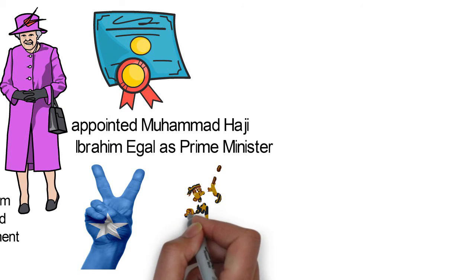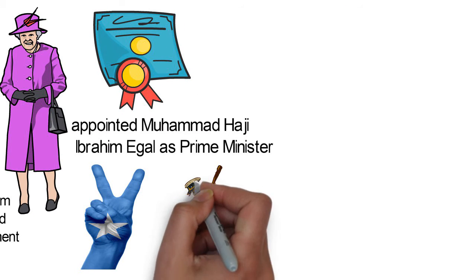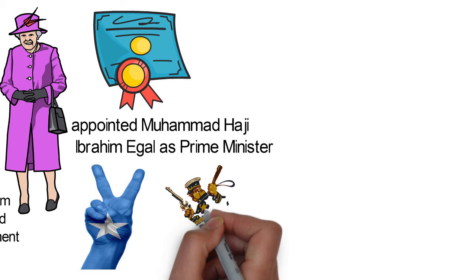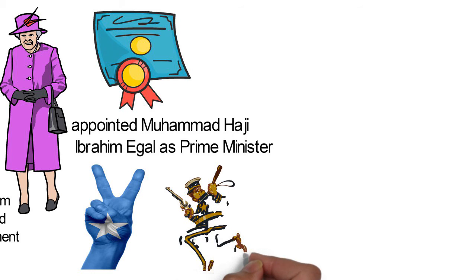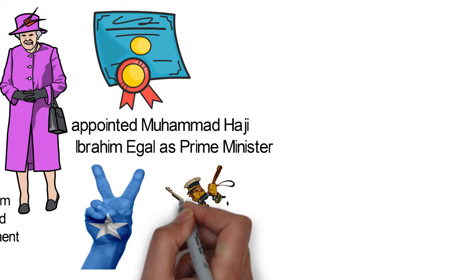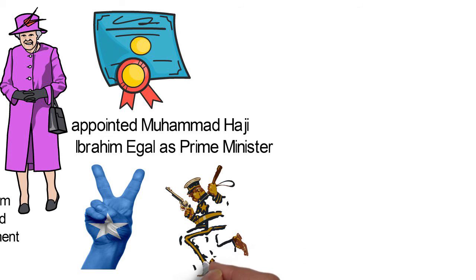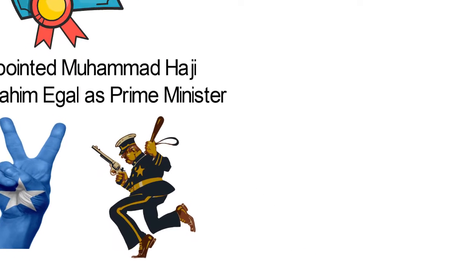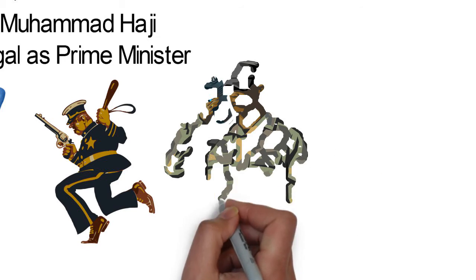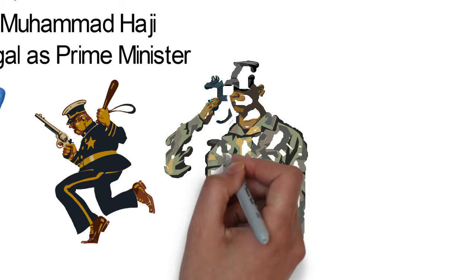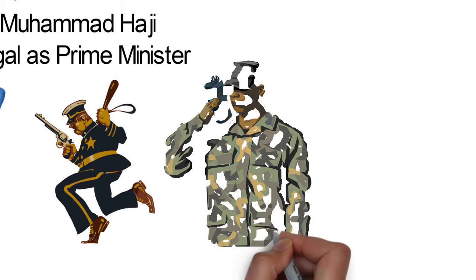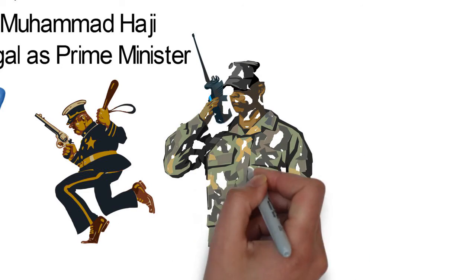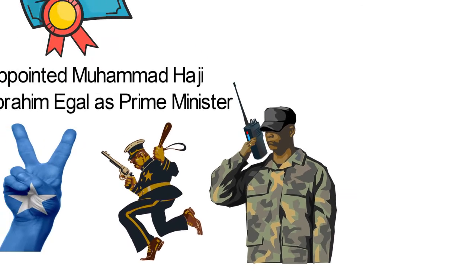On the 15th of October 1969, while paying a visit to the northern town of Las Anand, Somalia's President Abdurashid Ali Shemake was shot dead by a policeman. His assassination was quickly followed by a military coup d'état on the 21st of October 1969, the day after his funeral.